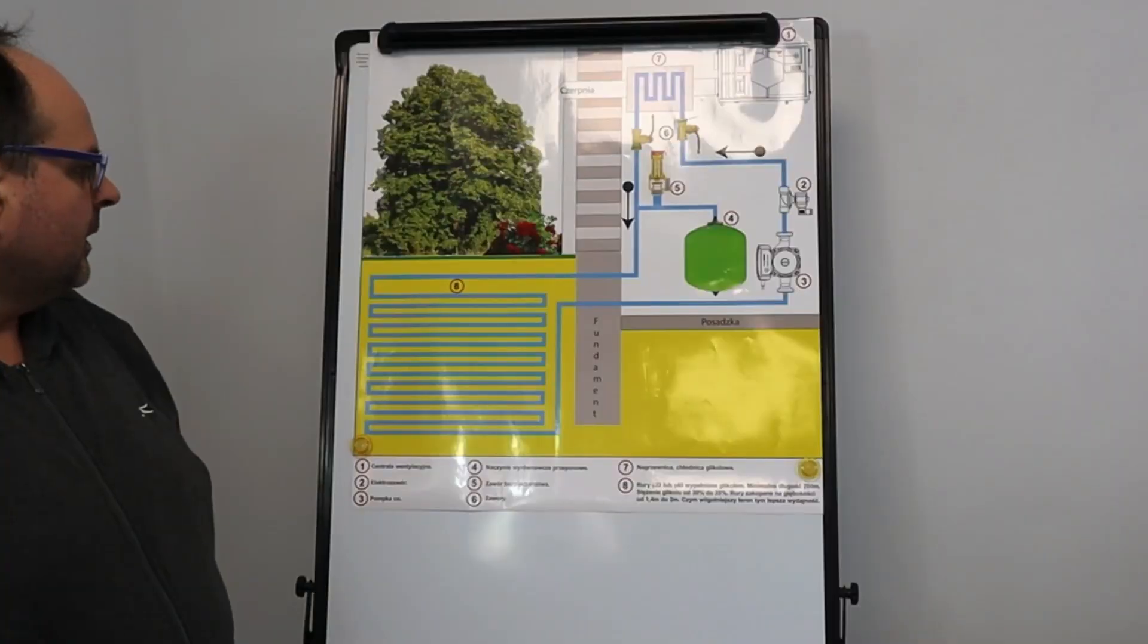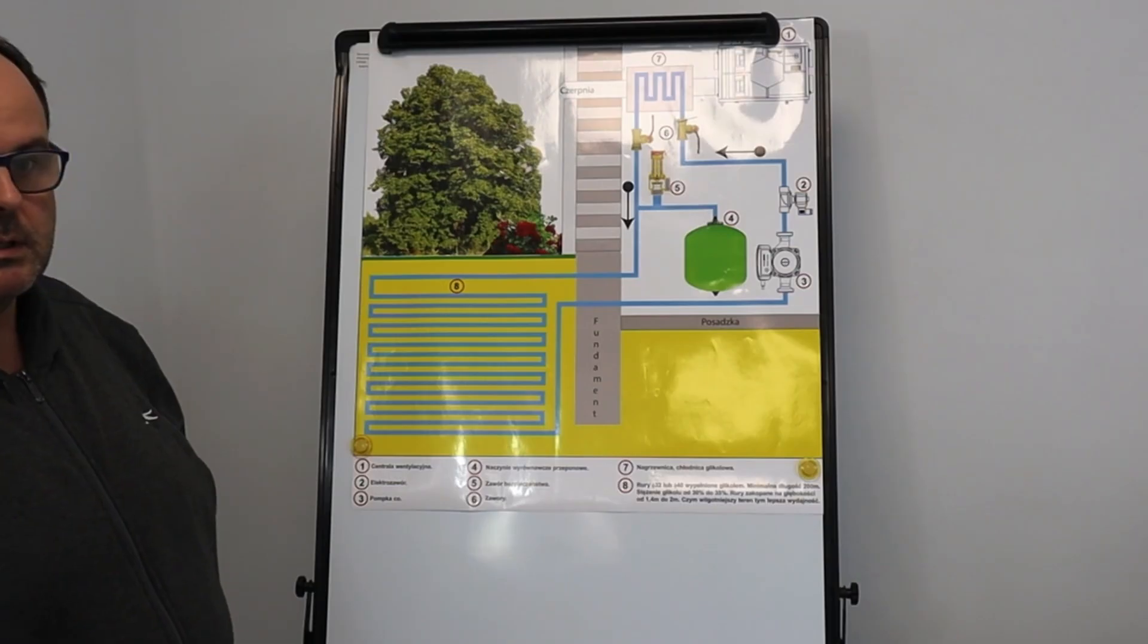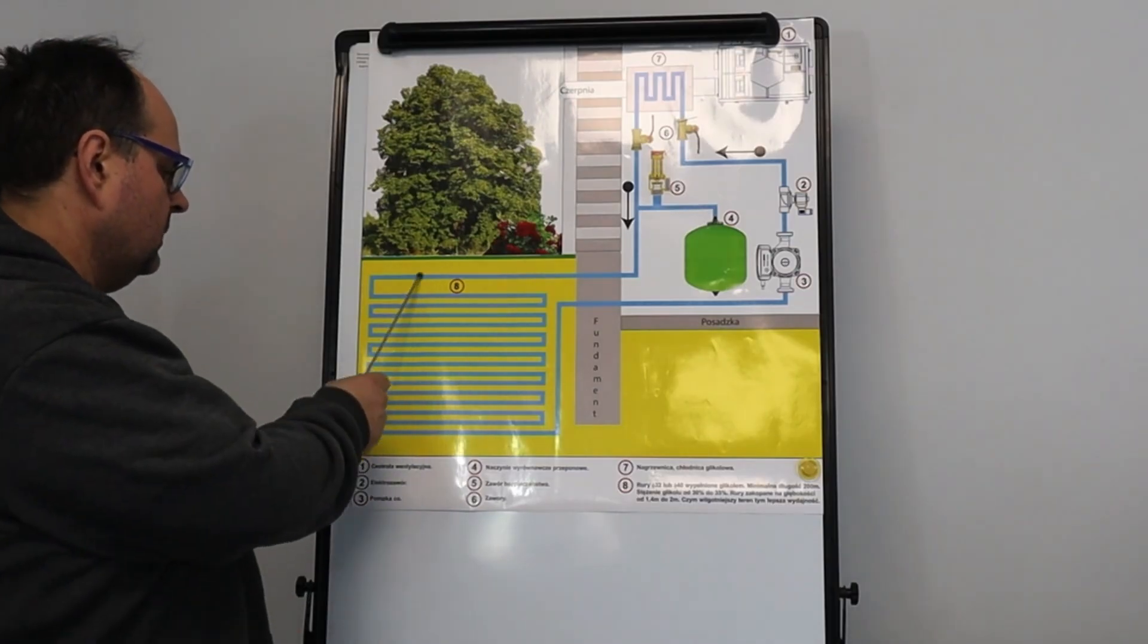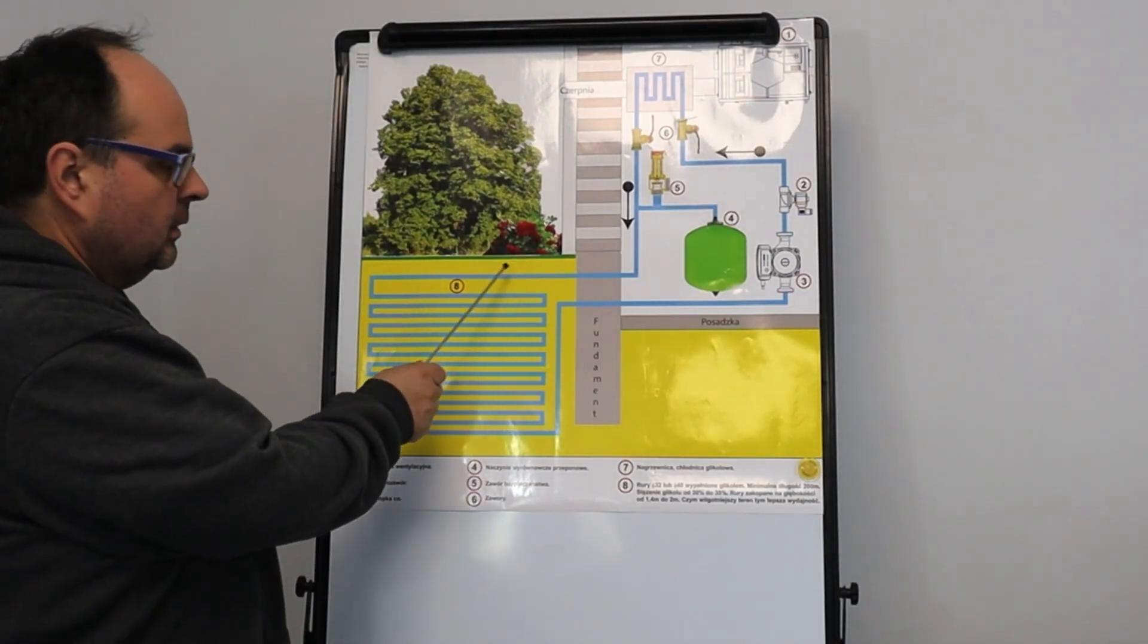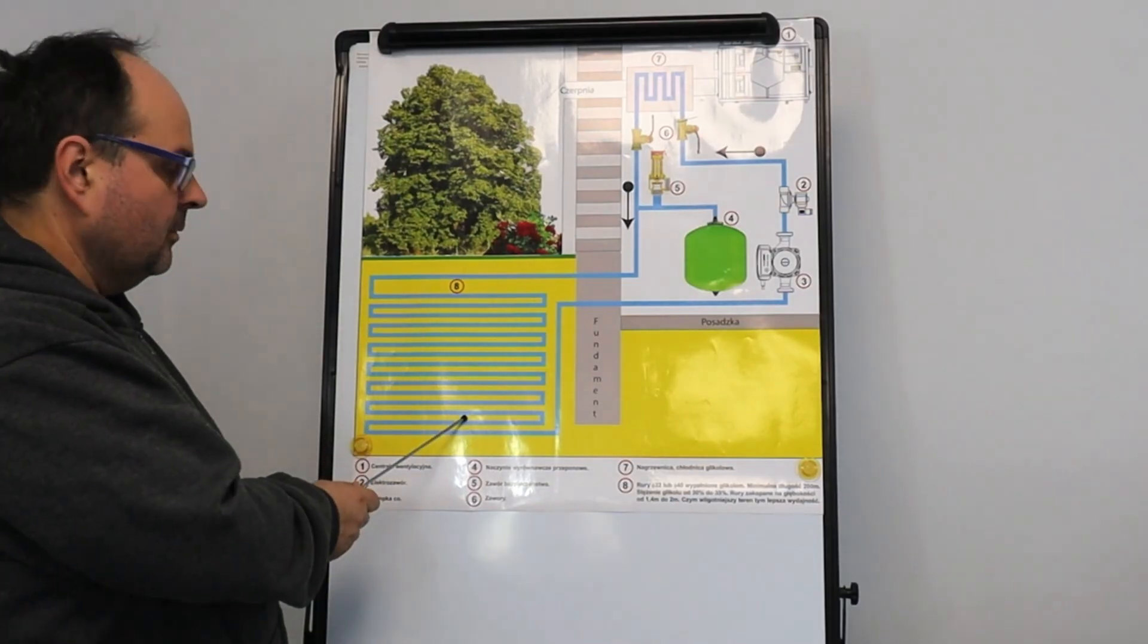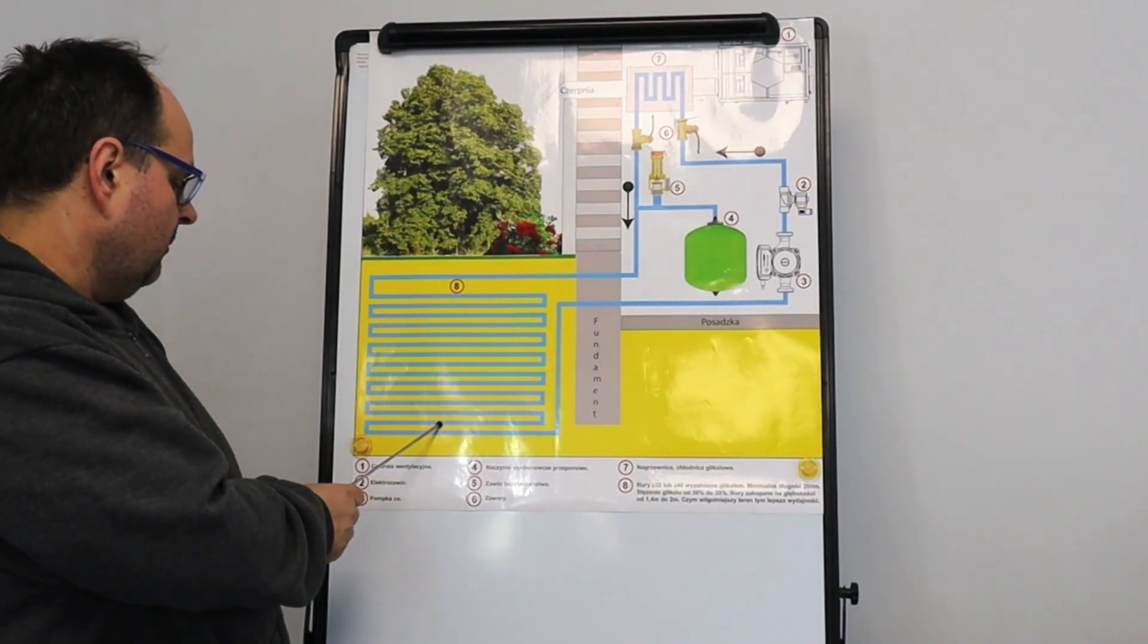I will explain the simplest way to set up this system. We have 32 millimeter diameter tubes buried at a depth of 1.82 meters.